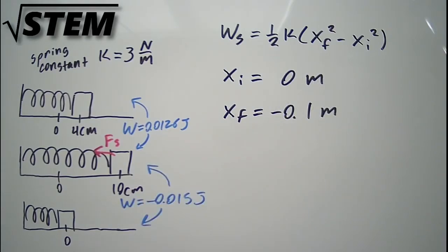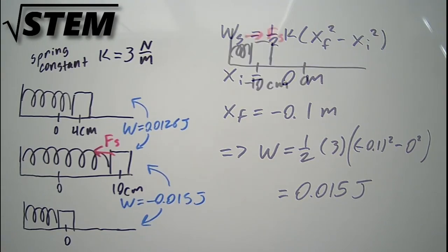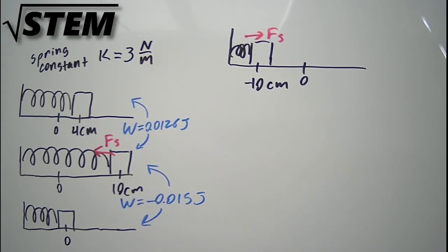Now, going from an initial x position of 0 centimeters back to a final x position of x equals minus 10 centimeters or minus 0.1 meters, we'll find that the work done on this part of the trip is positive 0.015 joules. Once the block is on the negative side of the resting position, the force from the spring points in the positive direction and does positive work on it.